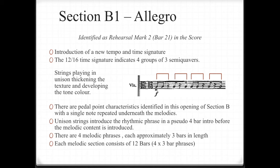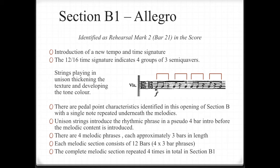Unison strings introduce the rhythmic phrase in a pseudo four-bar intro before the melodic content is introduced. Like section A, there are four melodic phrases, each approximately three bars in length. Each melodic section consists of 12 bars — four times three-bar phrases — and the complete melodic section repeats four times in total in section B1.